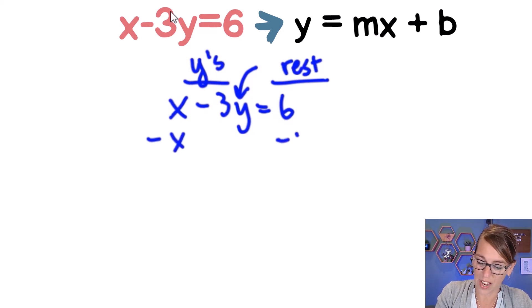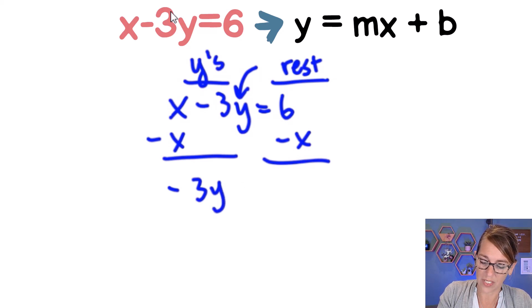Let's subtract the x from both sides. So I get negative 3y equals, now I really want my x term first. So I'm going to do the same thing I did before and write the x term first, negative x, and then 6 is a positive 6, so plus 6.